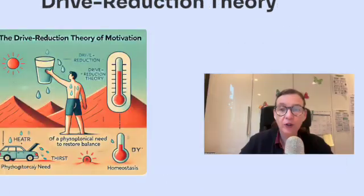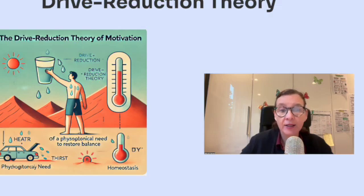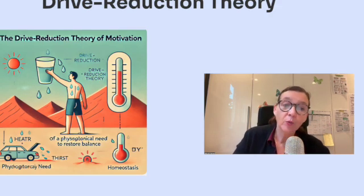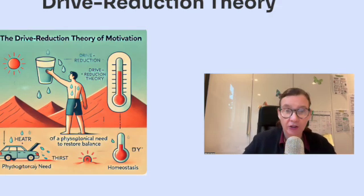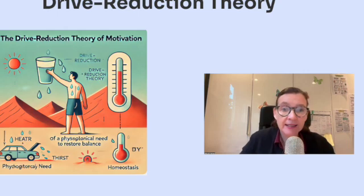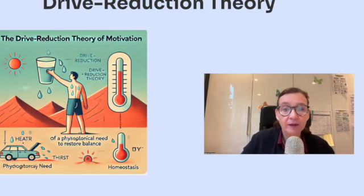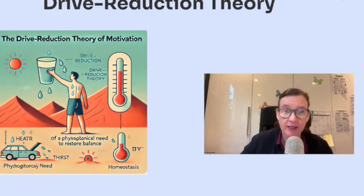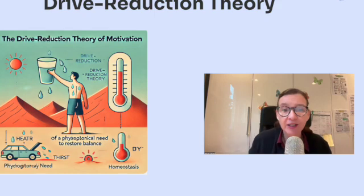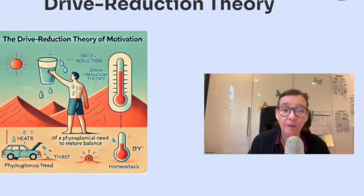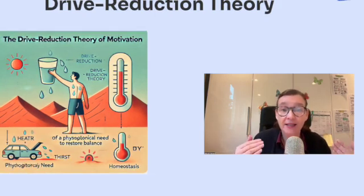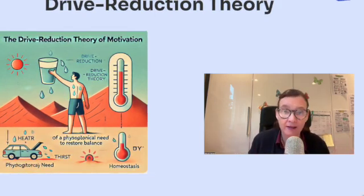The first theory is drive reduction theory — a key concept in motivation. It's the idea that our behaviors are motivated by the need to maintain homeostasis, which is a fancy word for keeping our bodies in a stable, balanced state. Think of it like your body's thermostat — it works to keep everything just right.